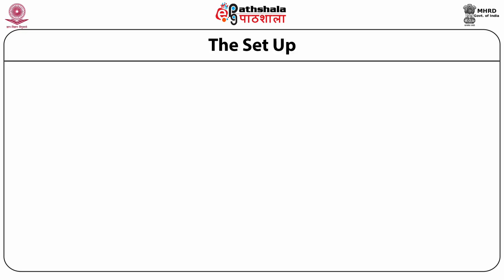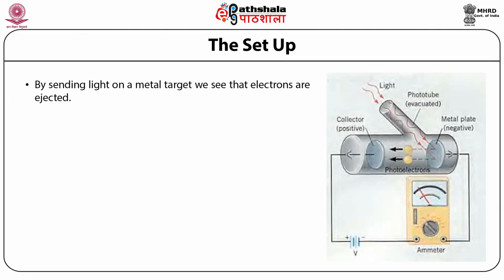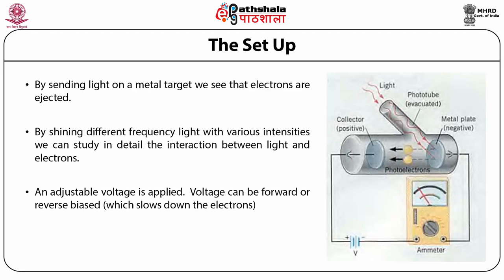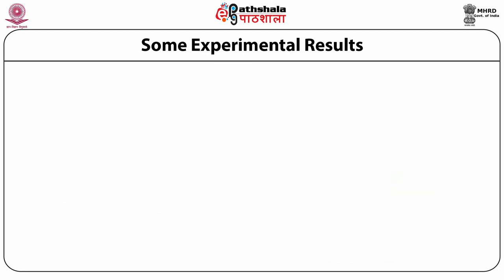We will now see the famous experiment that led to Einstein's Nobel Prize, dealing with how electrons and photons interact. The basic idea: by sending light onto a metal target, electrons are ejected and can create a detectable current. By applying a counter voltage, we can change the current and determine the number of electrons ejected and their individual energy. By shining different frequency light with various intensities, we can study in detail the interaction between light and electrons. An adjustable voltage is applied which can be forward or reverse biased to slow down the electrons. Photoelectrons return to the cathode through an emitter that records the current.